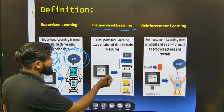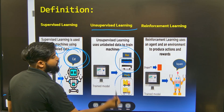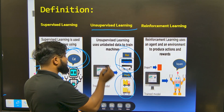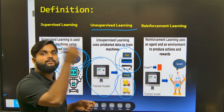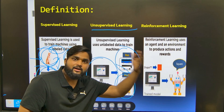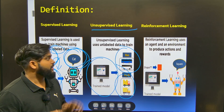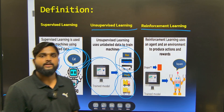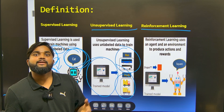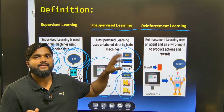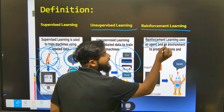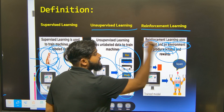In unsupervised machine learning, we take multiple data inputs — it may be cats, dogs, buses, or trucks. We feed that data to our machine learning model and make the machine find patterns to predict whether the data passed is a bus or a truck. In reinforcement learning, we work with an agent and an environment. To get the maximum reward, we make the agent interact with the environment, and reinforcement learning uses this agent-environment interaction to produce actions and rewards.